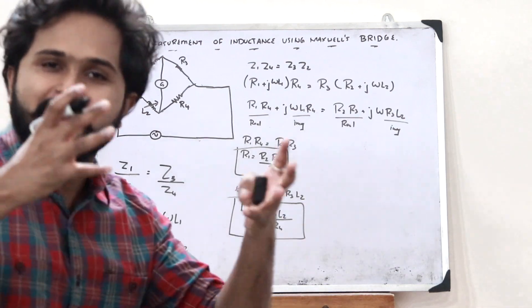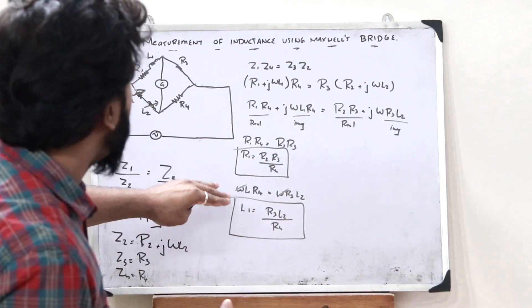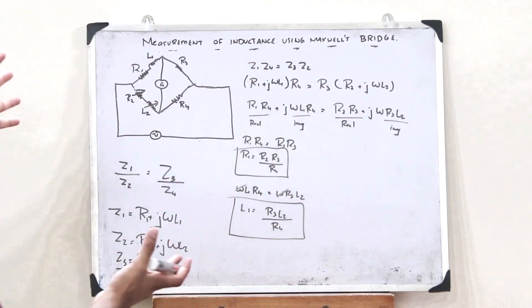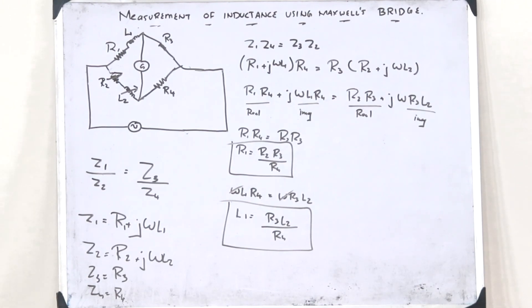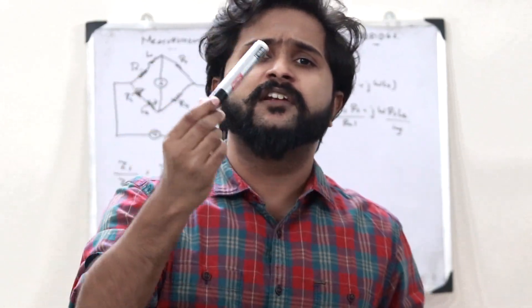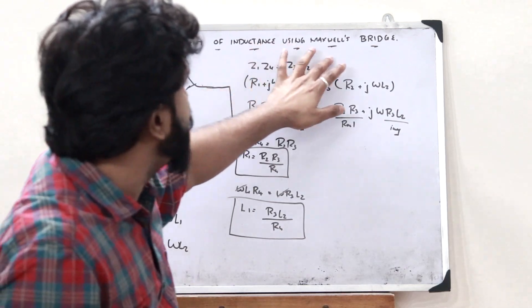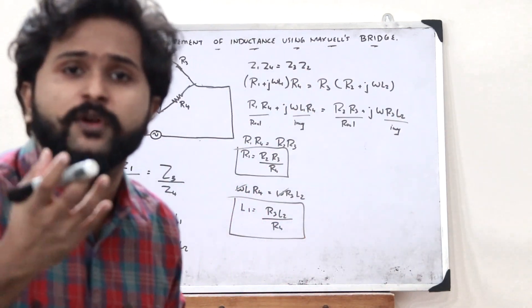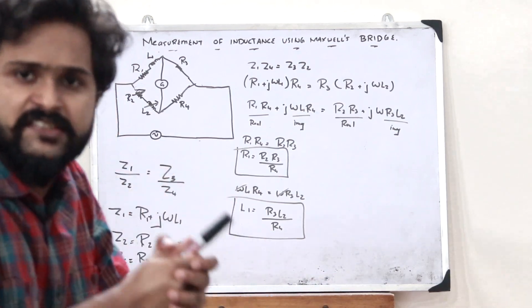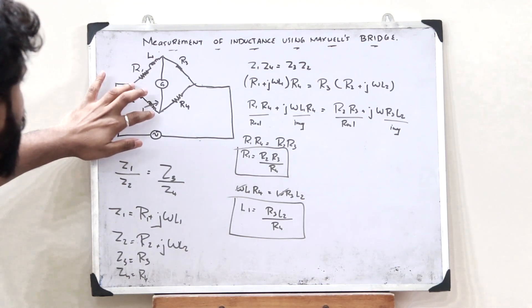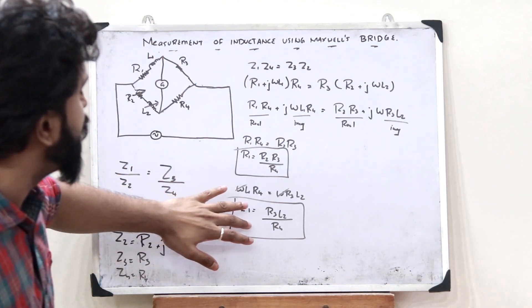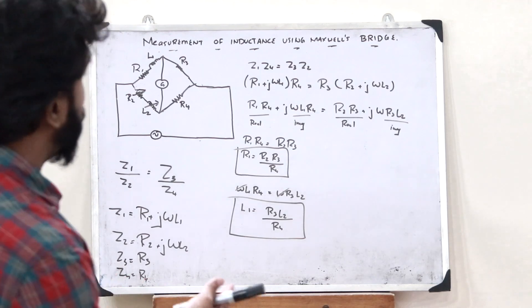This is the value of the unknown inductance of this particular inductor. This is how we find the value of an unknown inductance using a Maxwell's bridge. Simply by adjusting the variable inductance and resistor to obtain a balanced condition, we can find the unknown inductance using the formula L1 equals R3 L2 divided by R4.